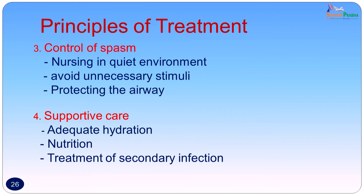The third principle of treatment is to control the spasm. Every time the patient goes into a muscle spasm, it is very painful and dangerous because the respiratory and diaphragmatic muscles, if they go into spasm, may result in respiratory failure. The patient should be nursed in a quiet environment to avoid unnecessary stimuli. The airway should be protected and supportive care given — adequate hydration with IV fluids, nutrition, and treatment of any secondary bacterial infection. In this patient, a few staphylococci were also seen in the smear, which might require another drug for treatment if resistant to penicillin.